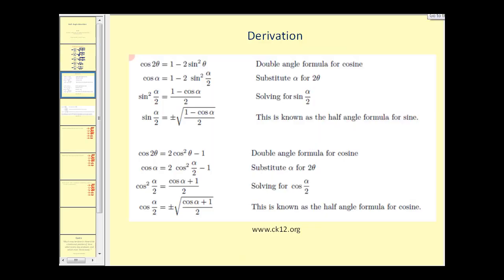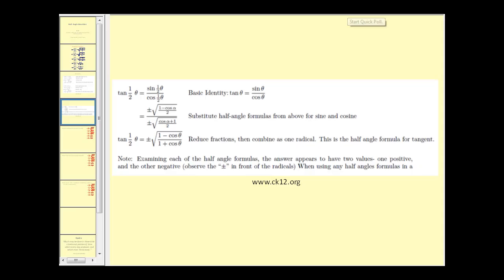I did include the derivation of these identities. We don't have time right now to go through them, but you may want to pause the video and see how we can obtain these formulas. The next slide also shows how to find the half angle identity for tangent. Notice that it comes from taking sine of one half theta and dividing by cosine of one half theta.